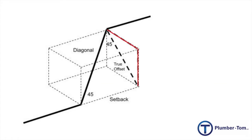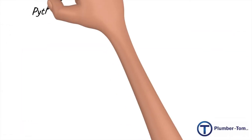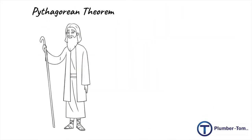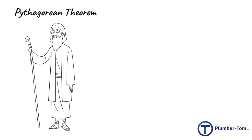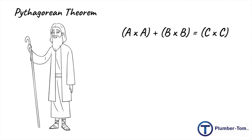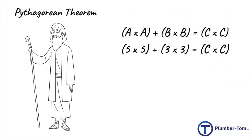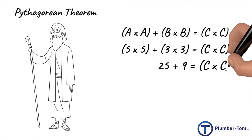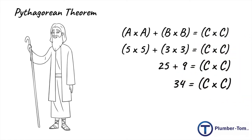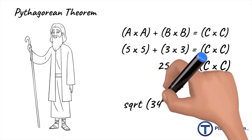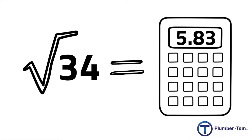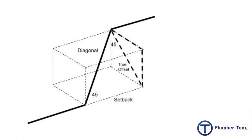With that understanding, let's calculate a rolling offset with an offset of 5 inches and a rise of 3 inches. In order to do this, we will need to use the Pythagorean theorem, which states that a² + b² = c². So with that as our starting point: 5 × 5 + 3 × 3 = c × c. That gives us 25 + 9 = c², so 34 = c². To find c, we take the square root of both sides — using a calculator, the square root of 34 gives us c = 5.83.